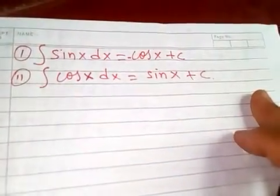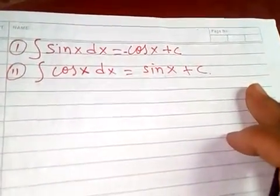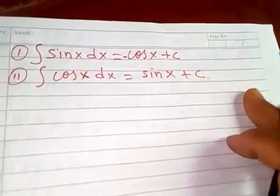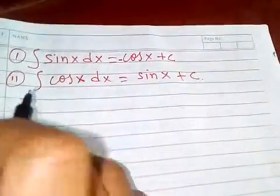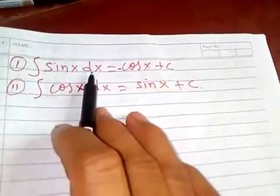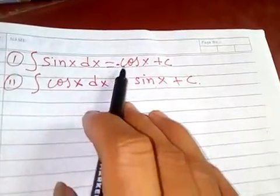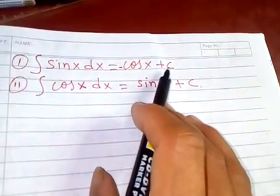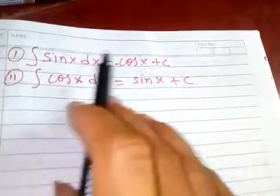Thanks for watching my video. Today let's discuss important formulas in integration. Integration of sin(x)dx equals -cos(x) + c, where c is a constant of integration.